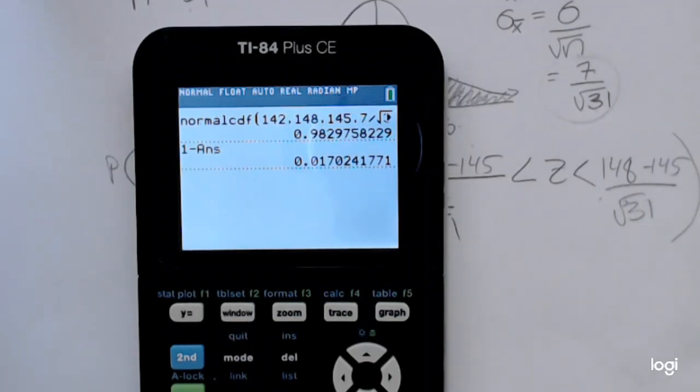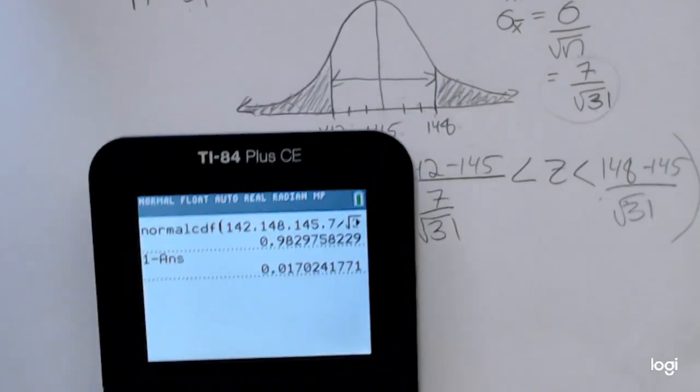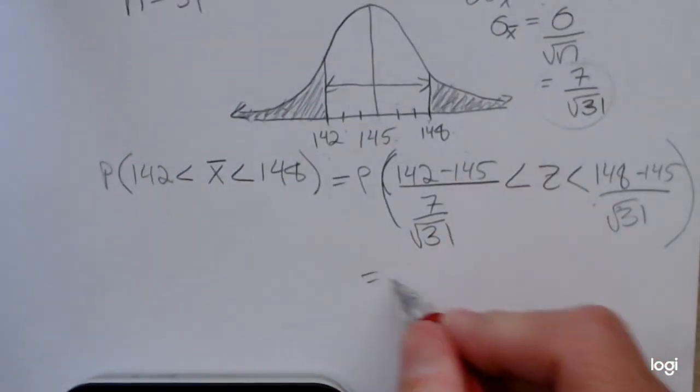So the outer two tails, the two areas together, is 0.0170, if I wanted to round to 4.